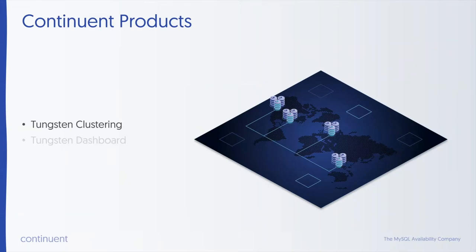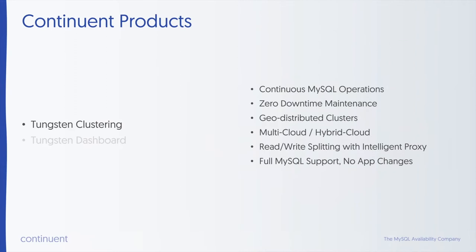We're focusing on AWS in this session, however the concepts and functionality are the same regardless. If you're interested in Tungsten Clustering in Google Cloud, Azure, or on-premise, still watch this — you may learn from it and then come talk to us. Some key benefits: continuous MySQL operations, zero downtime maintenance, geo-distributed clusters, and multi-cloud hybrid cloud support. You could have clusters spanning AWS and Azure, or AWS and Google, or a combination of on-premise and cloud.